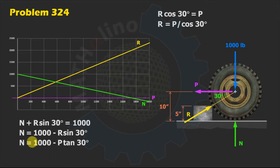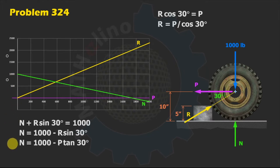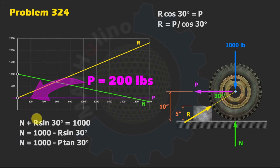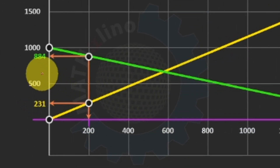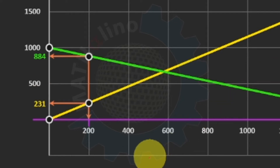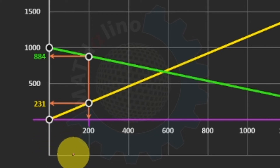When P is zero, R is zero and N is 1,000 pounds. If we apply P equal to 2,000 pounds, N decreases to 884 pounds while R increases to 2,310 pounds approximately. As we continue increasing P, both curves evolve along their linear paths.